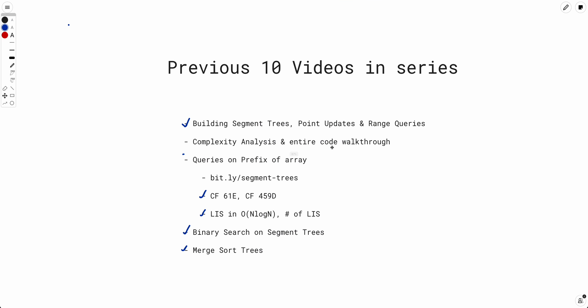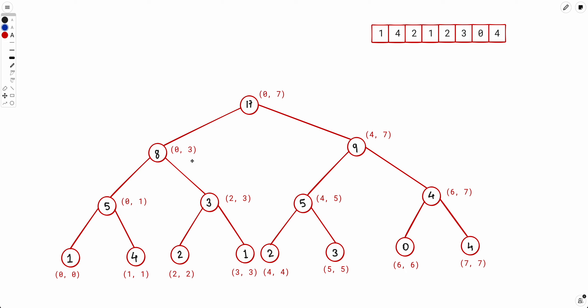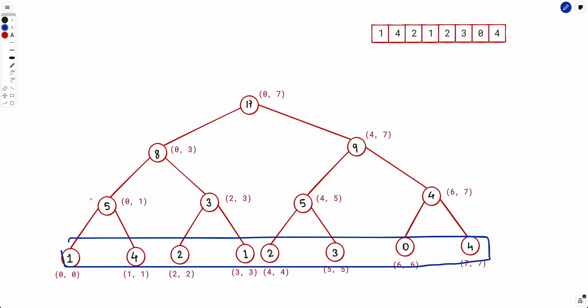With that, let's start with a brief recap of the merge sort tree itself. If you remember, this is how a usual segment tree would look like. You have the actual elements in the array at the leaves of the tree, and then in each non-leaf node you will have some property based on the children. In this particular example we have maintained the sum across the children — so 1 plus 4 is 5, 2 plus 1 is 3, and so on. Now the issue with this structure is we know there is an 8 but we don't know which elements contributed to this 8.